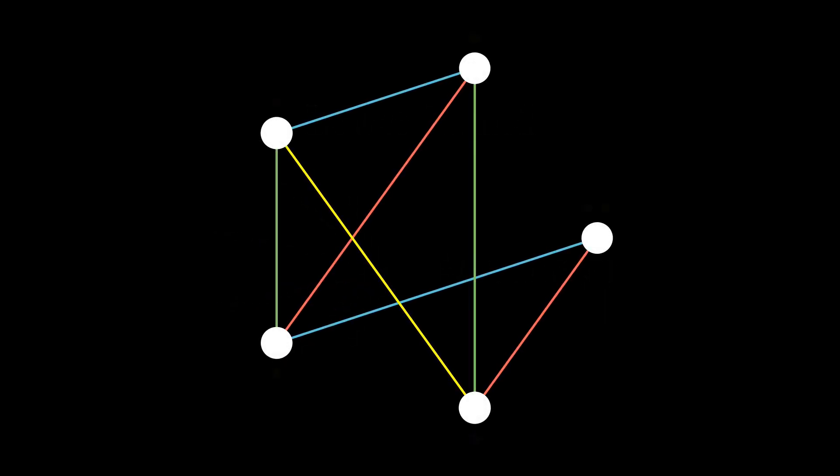Before proving the upper bound, let's make a quick observation that will be useful during the proof. When we have Δ(G) + 1 colors, each vertex of the graph has at least one free color. By free, we mean that the vertex doesn't have an edge of this color. This makes sense, because we have one more color than the maximum degree of the graph.